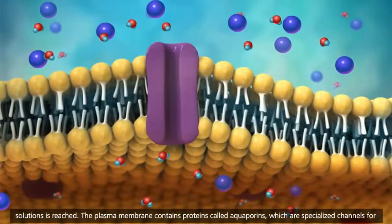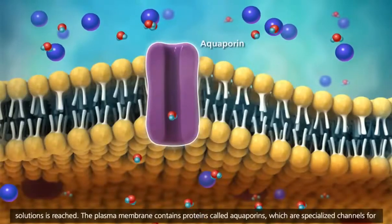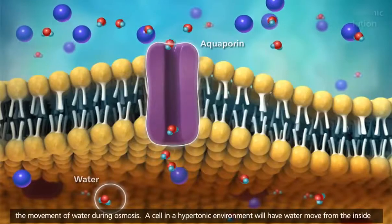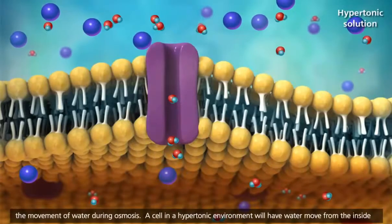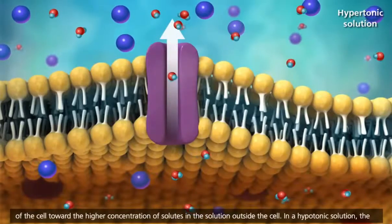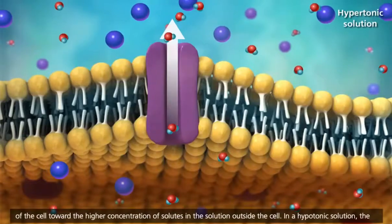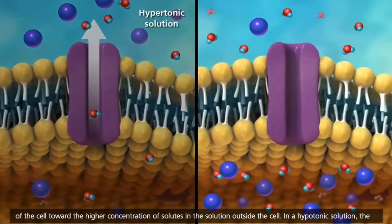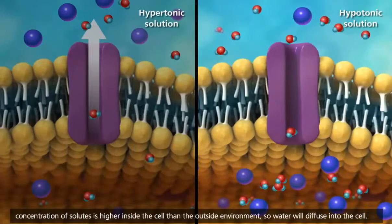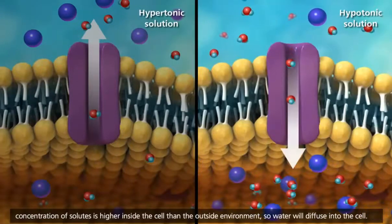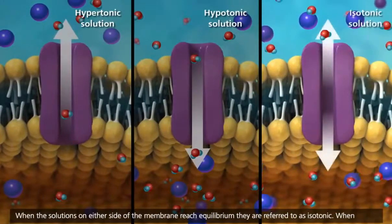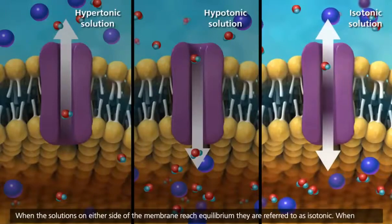The plasma membrane contains proteins called aquaporins, which are specialized channels for the movement of water during osmosis. A cell in a hypertonic environment will have water move from the inside of the cell toward the higher concentration of solutes in the solution outside the cell. In a hypotonic solution, the concentration of solutes is higher inside the cell than the outside environment, so water will diffuse into the cell. When the solutions on either side of the membrane reach equilibrium, they are referred to as isotonic.